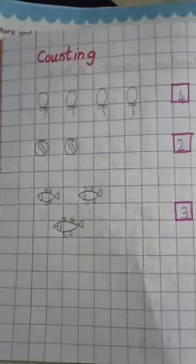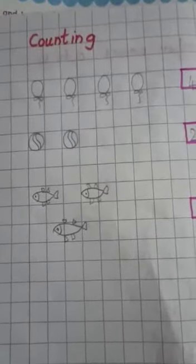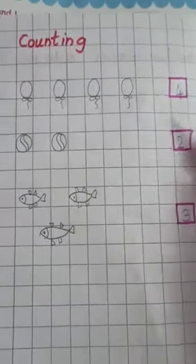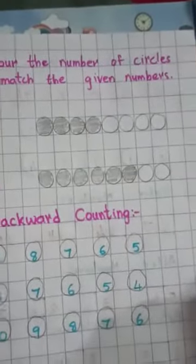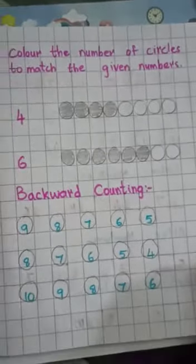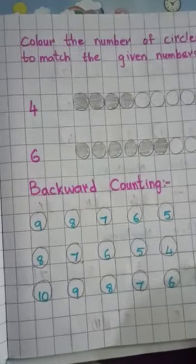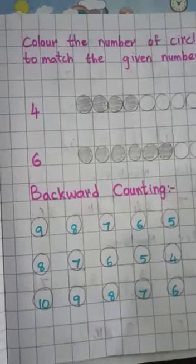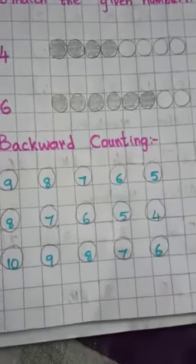Next, counting: please draw these objects, write the number of objects, count them and write. Color the number of circles to match the given numbers — draw these circles and also color them.